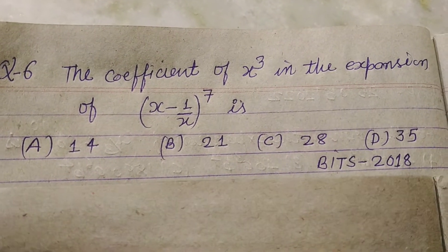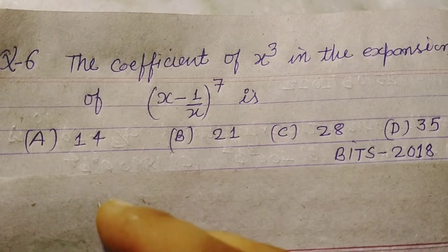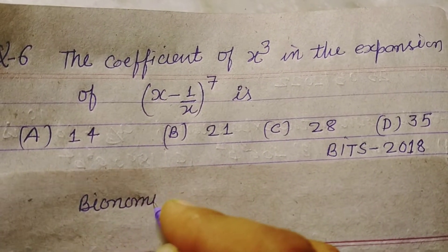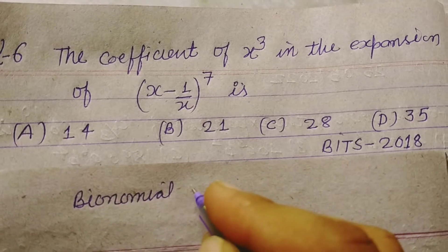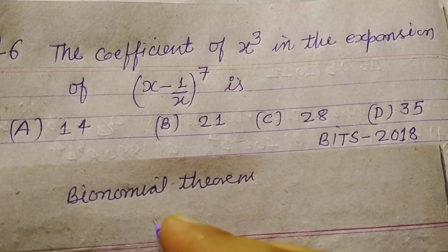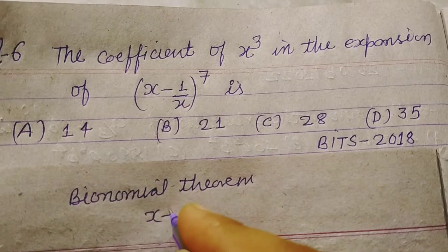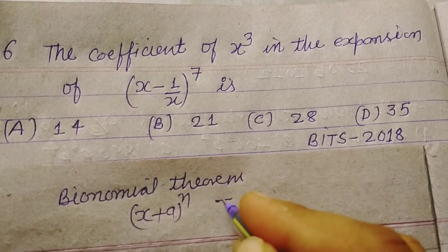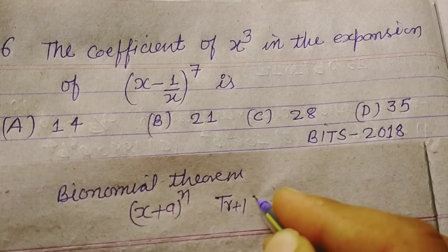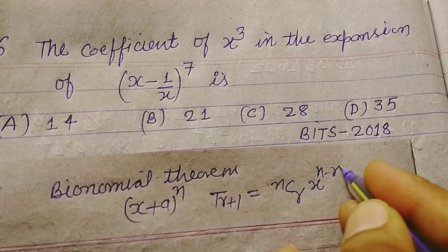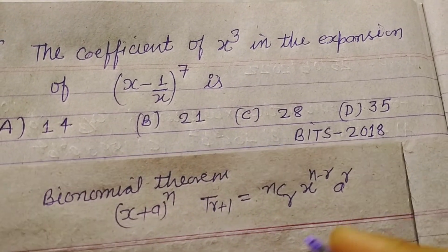So students, first we know that by Binomial Theorem, in the expansion of x plus a to the power n, the tr plus 1 term is equal to nCr x to the power n minus r and a to the power r.